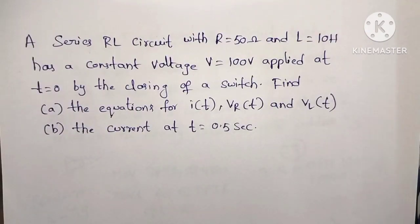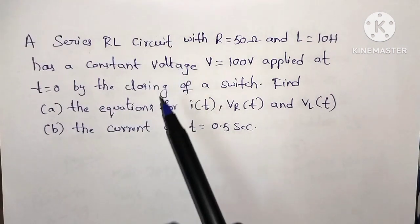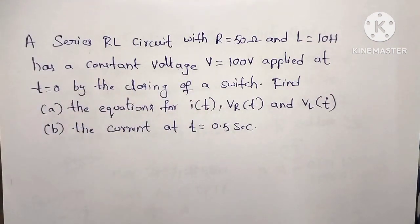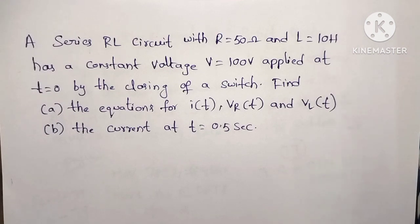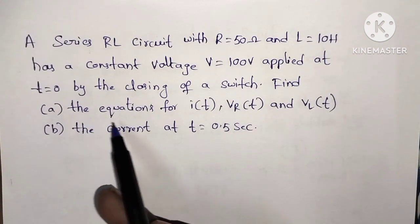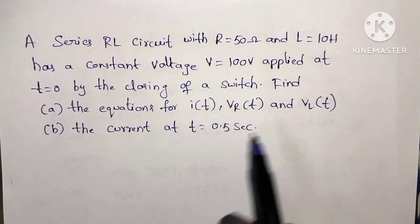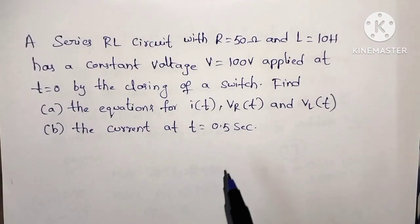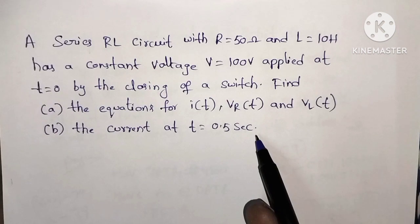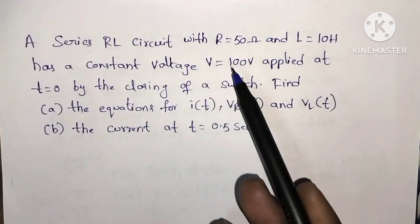Hello, in this video we look at the DC response of an RL circuit. The problem is a series RL circuit with R equal to 50 ohms and L equal to 10 henrys, with a constant voltage V equal to 100 volts applied at t equal to 0 by the closing of a switch. Find the equation for I of t, Vr of t, and Vl of t. Second point: find the current at t equal to 0.5 seconds.